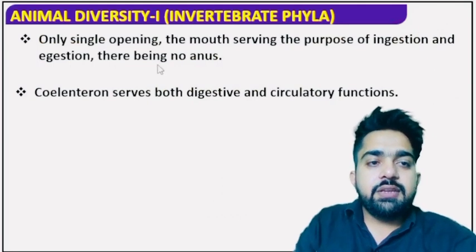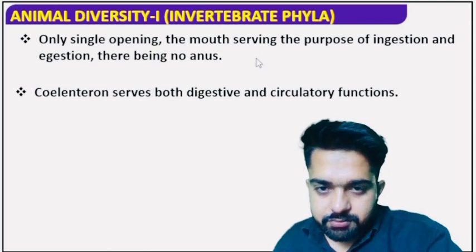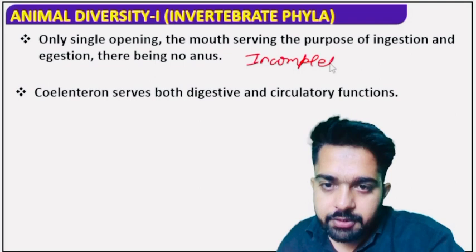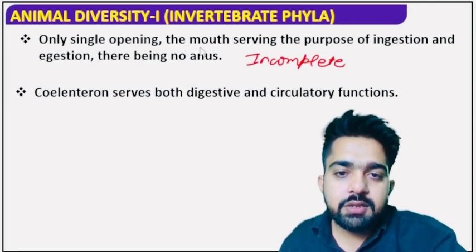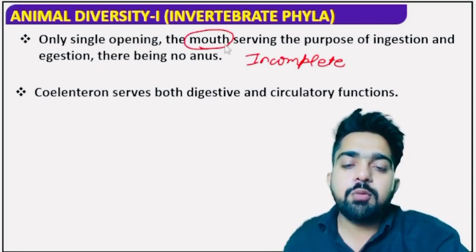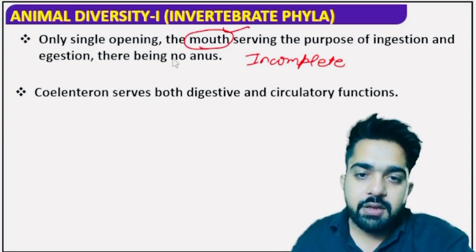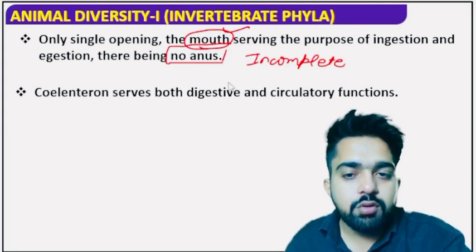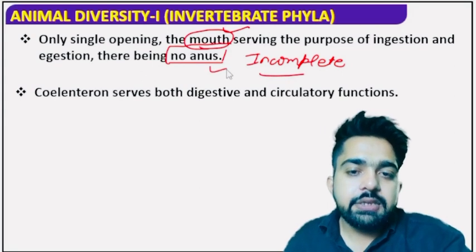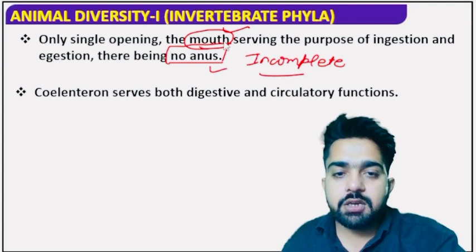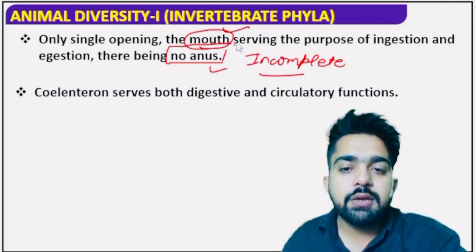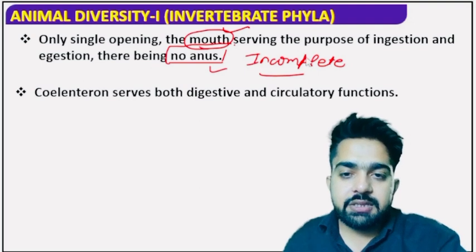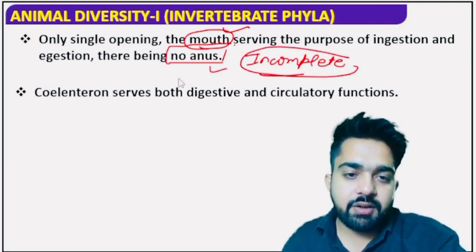They basically have an incomplete digestive system. Here the digestive system is incomplete because there is only a single opening present — meaning only the mouth is present and there is no anus. If only mouth is present, it is considered incomplete. If both mouth and anus are present, then it is a complete digestive tract. But in case of phylum Cnidaria, there is an incomplete digestive tract.